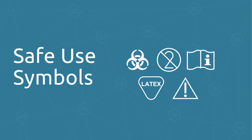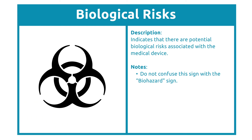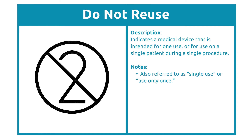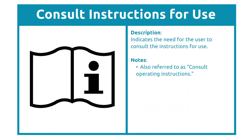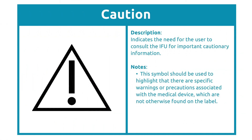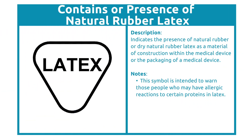Some medical devices present risk to the user. These Safe Use symbols act as a warning to reduce some of that risk. The Biohazard symbol denotes the presence of a biological agent — you might see this on a sharps container or other devices that have contact with biological materials. Devices categorized as single-use are labeled with that symbol. The Consult Instructions for Use symbol tells the user to read the included documentation when safety information requires more space than the label provides. The Caution symbol informs users to take extra precautions and that more detailed information is available in the instructions for use. Many people have an allergic reaction to latex, and this symbol serves as a warning to them.